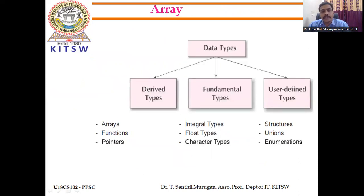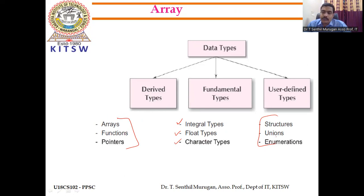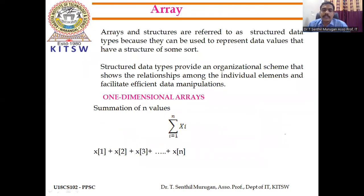Data types in C can be classified into three categories: fundamental types such as integer, float, and character; derived types such as array, functions, and pointers; and user-defined types such as structures, unions, and enumerations.